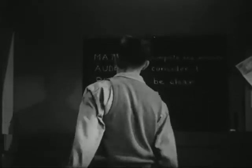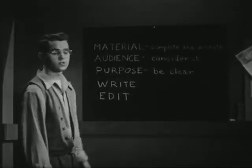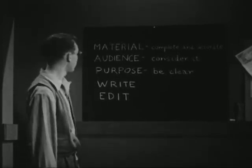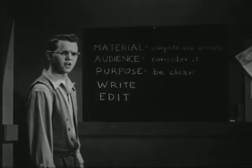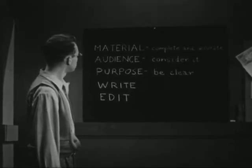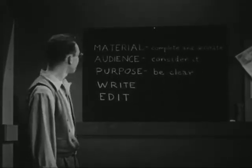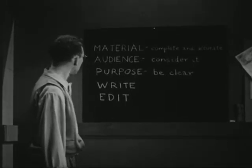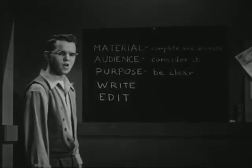Well, then I suppose we have material — complete and accurate. But according to these principles of effective writing we studied in English class, we can't stop there. Complete and accurate material — well, that's all right. Next: audience. Considerate.